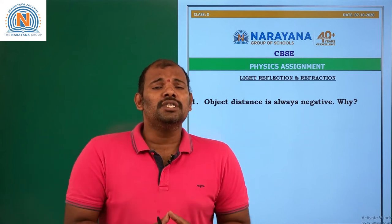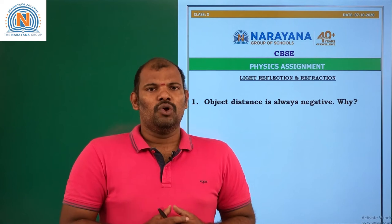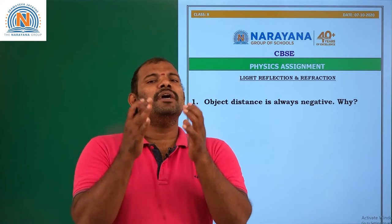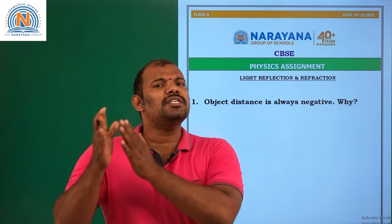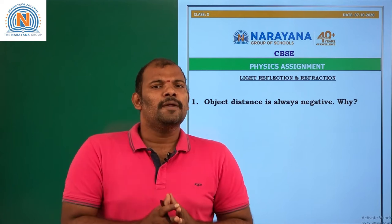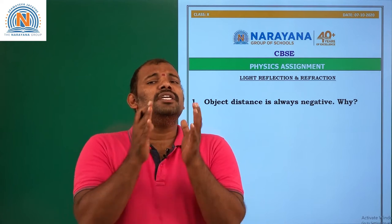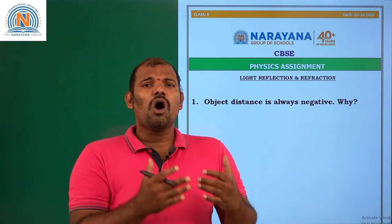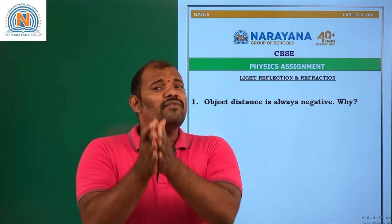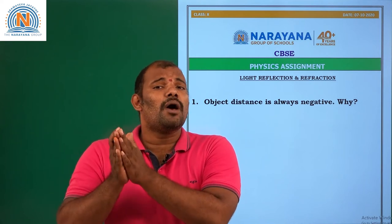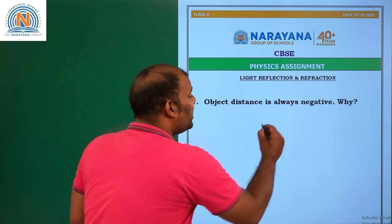All distances should be measured from the pole. We are measuring any distance — suppose object distance. Object distance is nothing but the distance from pole to object. So every distance should be measured from the pole.